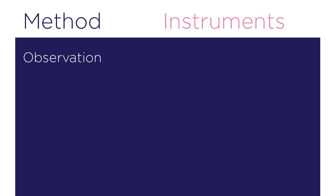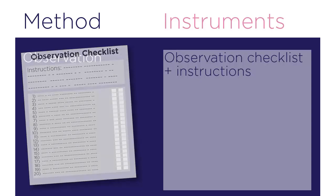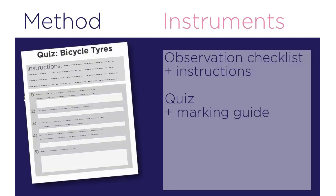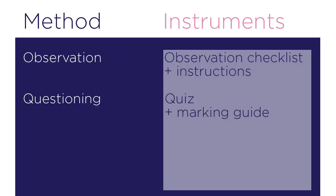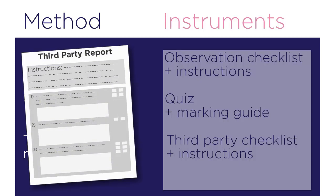The assessment methods and instruments she's developed are: number one, observation of the removal, repair, refit, inflation and testing of five different bicycle tyres across four different bike types. For this, Nicole has an observation checklist instrument with a set of 20 criteria which she's numbered. Number two, a short written quiz instrument with 10 questions and a marking guide — these questions are numbered. And number three, a basic third party report checklist for a supervisor to complete with a few items numbered one to three.